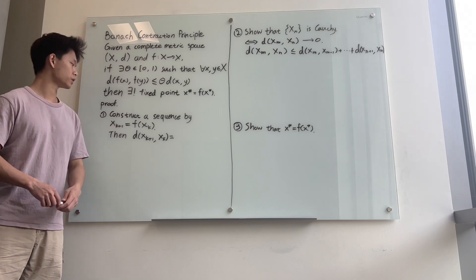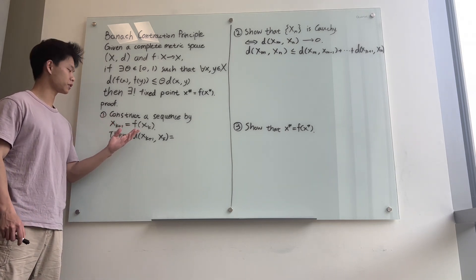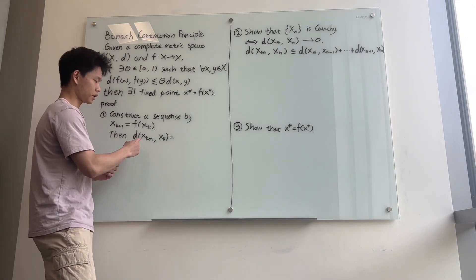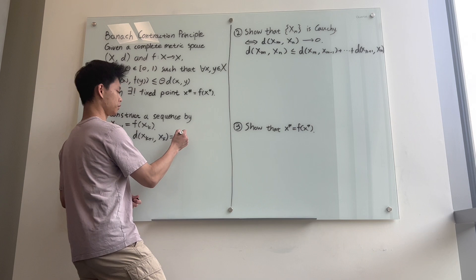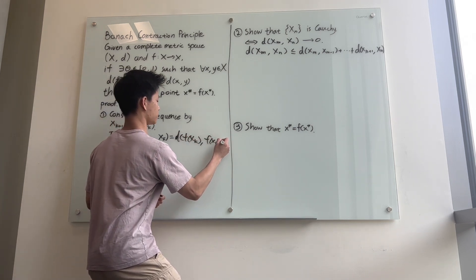Okay, now let's prove this. We first construct a sequence by the rule x_{n+1} equals f(x_n). Then we notice that the distance between two consecutive terms, x_{k+1} and x_k, is equal to d(f(x_k), f(x_{k-1})).